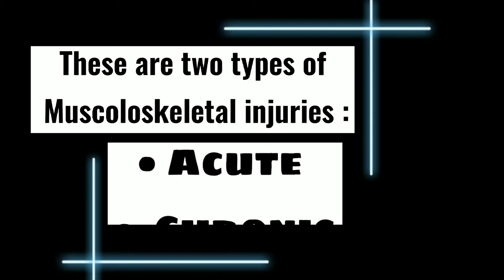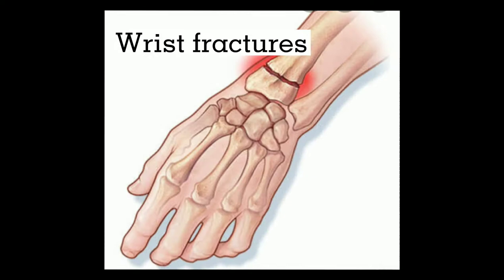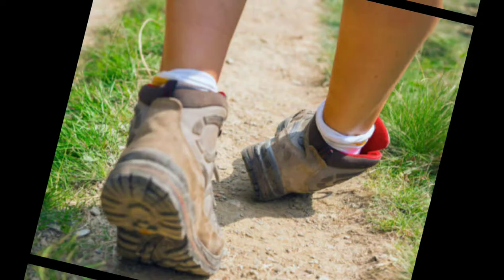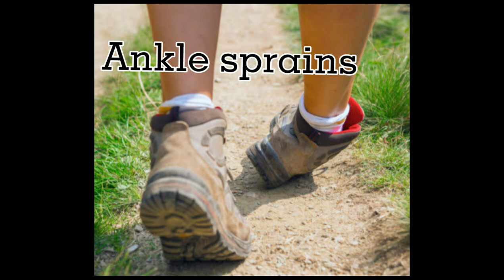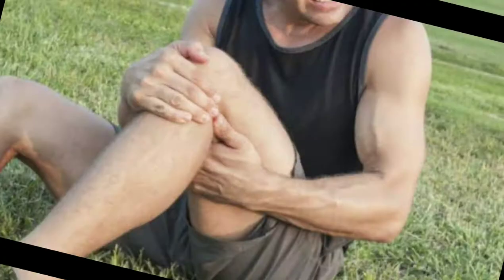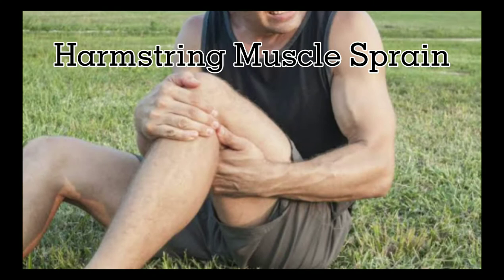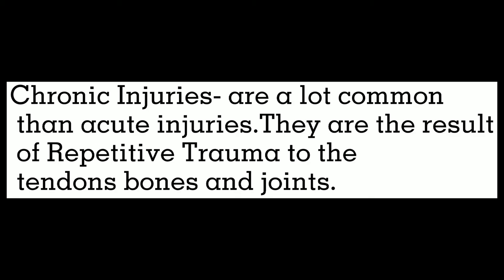There are two types of musculoskeletal injuries: acute and chronic. Acute injuries are usually the result of one traumatic event. Common examples include wrist fractures, ankle sprains, shoulder dislocations, and hamstring muscle strains.